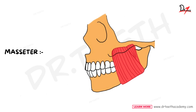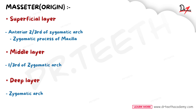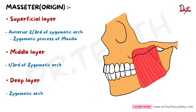Let's start with the masseter muscle. This muscle is quadrilateral in shape. Talking about its origin, we have three layers: the superficial, middle, and deep layer. The superficial layer originates from the anterior one-third of the zygomatic arch and from the zygomatic process of maxilla.